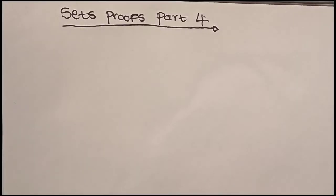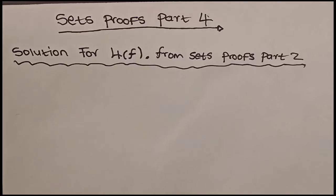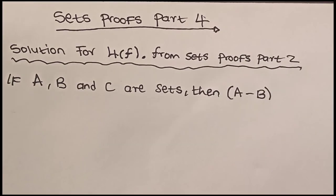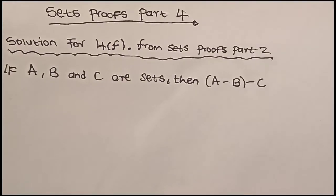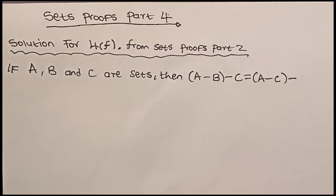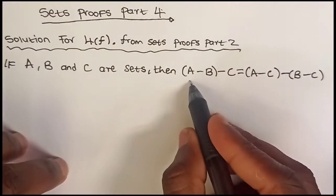First we'll have to solve the exercise which I last left on search proof part 2. In this video we'll be proving the symmetric difference. But first, let us show that if A, B, and C are sets, then A-(B-C) is the same as (A-C)-(B-C). So we just have to show this.